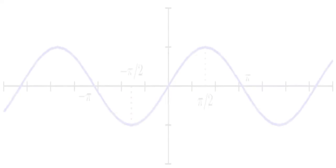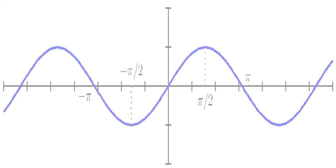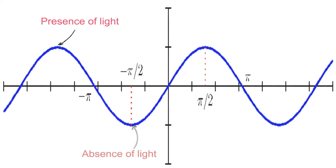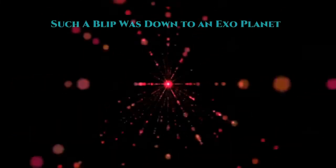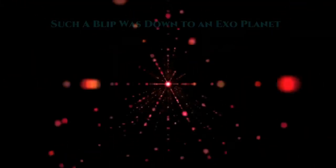As these waves were periodic in nature, that is, had bright regions as well as dark ones, you'd expect a sinusoidal graph like this one with this region representing the presence of light and the absence of light at this point. But in reality, we saw a deviation from a sine wave like this and inferred such a blip was down to an exoplanet.